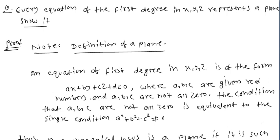The theorem is that every equation of the first degree in x, y, z represents a plane. Since given that every equation of first degree in x, y, z represents a plane.